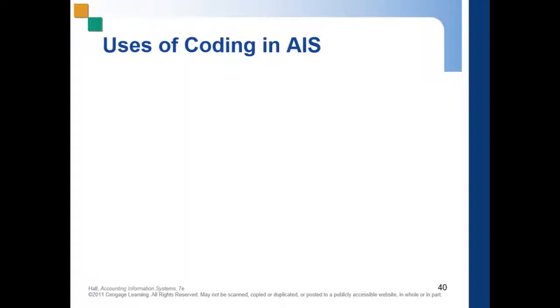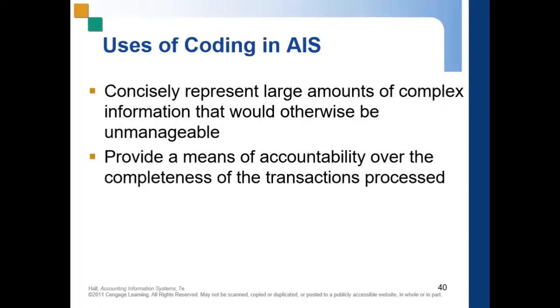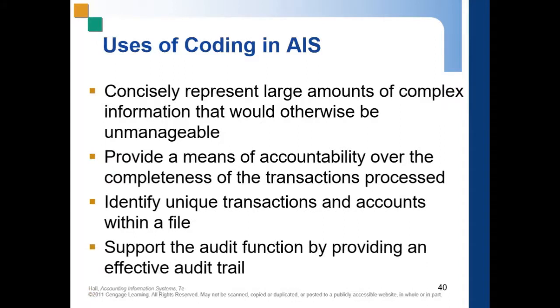Next we have the uses of coding in AIS. Coding is used to concisely represent large amounts of complex information that would otherwise be unmanageable. It provides a means of accountability over the completeness of the transactions process, helps identify unique transactions and accounts within a file, and supports the audit function by providing an effective audit trail.